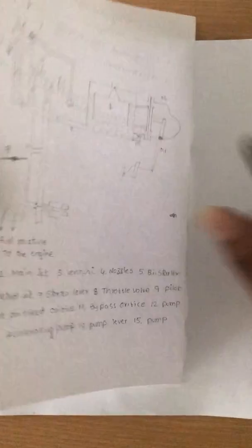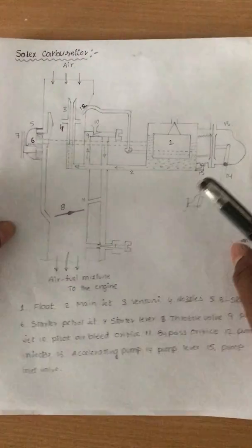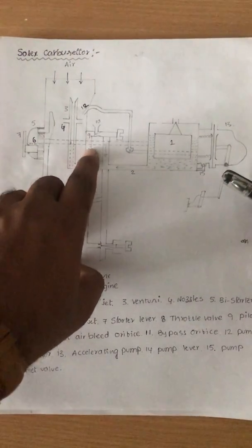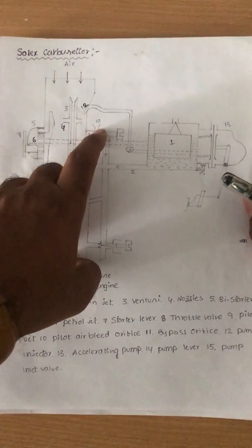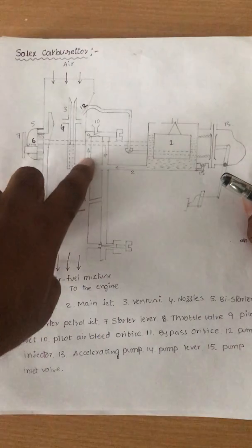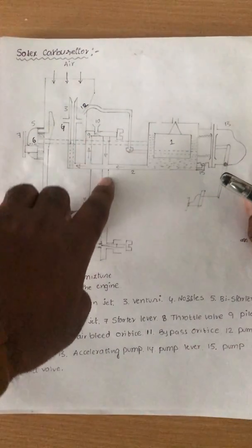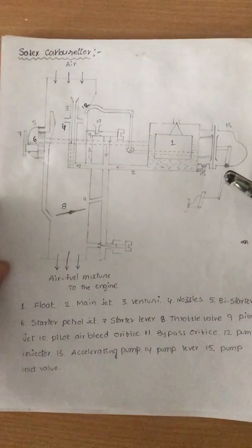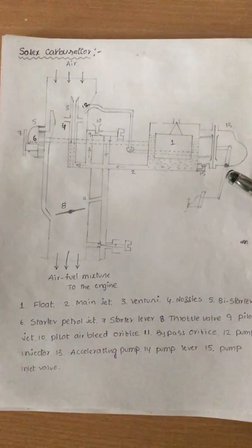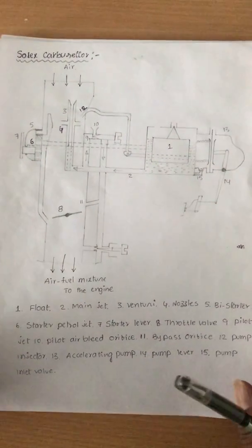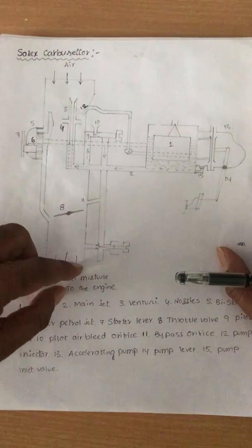The third condition is idling and slow running. The engine is running but there is no power output. At that time, fuel from this line enters the pilot jet — number ten is the pilot air bleed. Air from the atmosphere enters this passage. The air-fuel mixture from this line enters here; the screw is automatically adjusted so the air-fuel mixture keeps entering the engine. That is why even if you do not give acceleration, even if the throttle valve is not opened, the air-fuel mixture still enters the engine and the engine keeps running. This line is automatically provided for idling condition and low speed running.